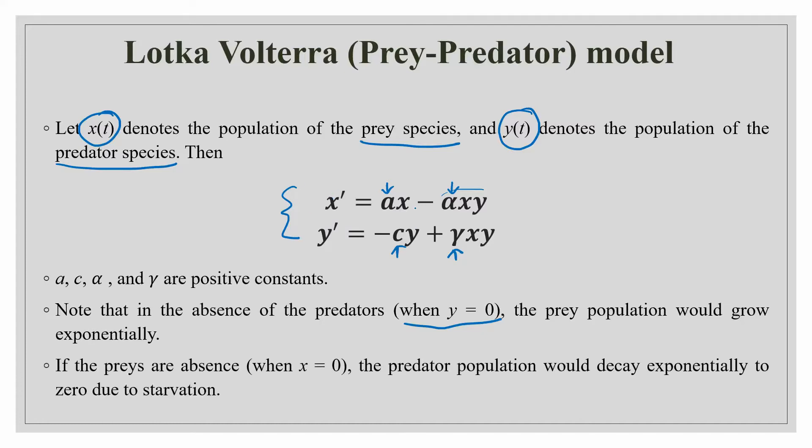And in the absence of prey, like if X becomes 0, then you can see that the predator population only this much equation will be there and it will decay exponentially because of starvation. So these were the assumptions that were made by them that the predator population depends entirely upon the prey population and if predator population is absent, then the prey population will grow exponentially.